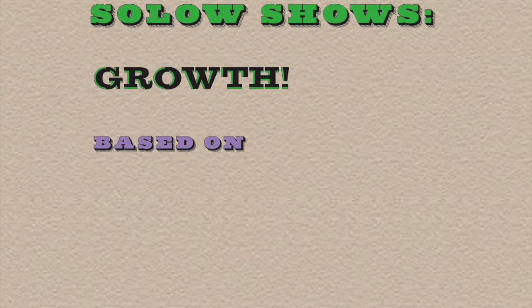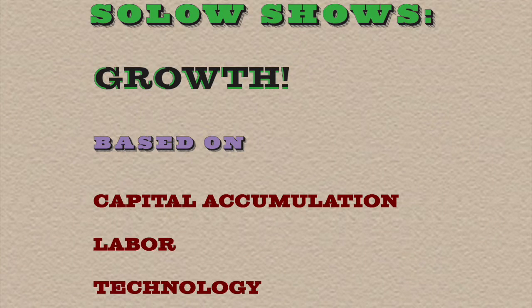The Solow model was created to depict economic growth based on three variables: capital accumulation, labor, and technology.